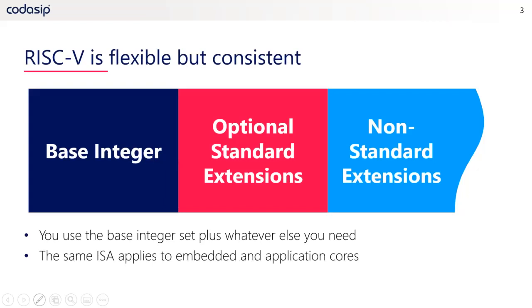One advantage of RISC-V, then, is that the same ISA applies to both embedded and application cores.